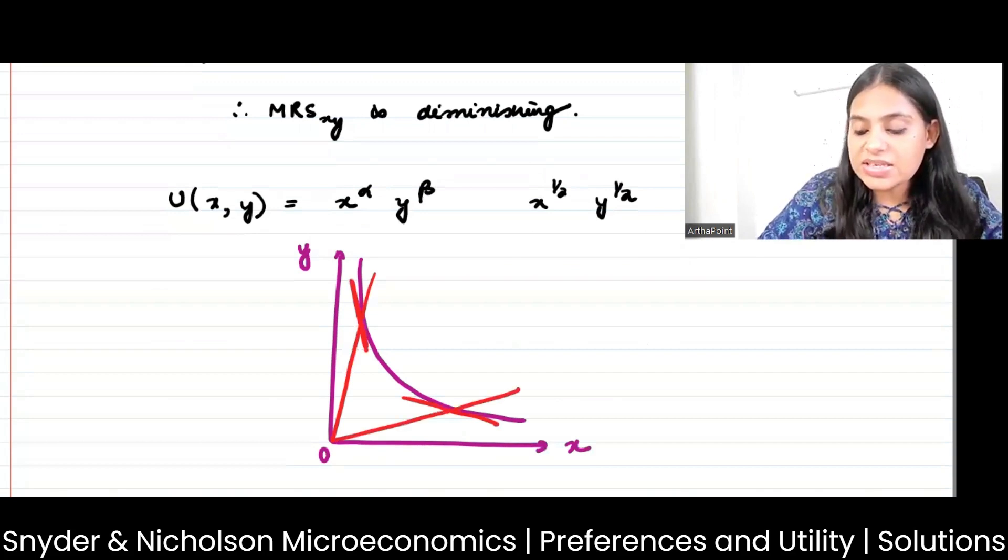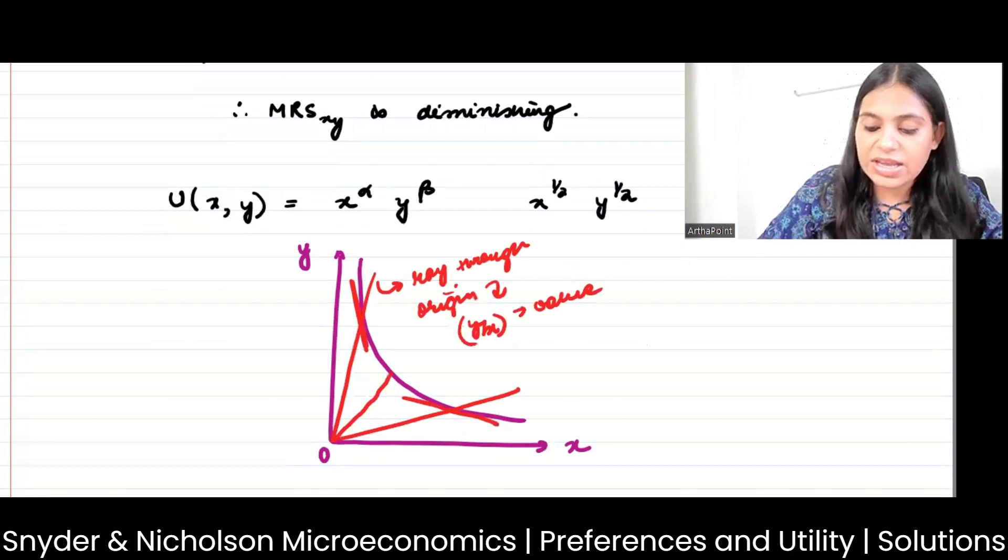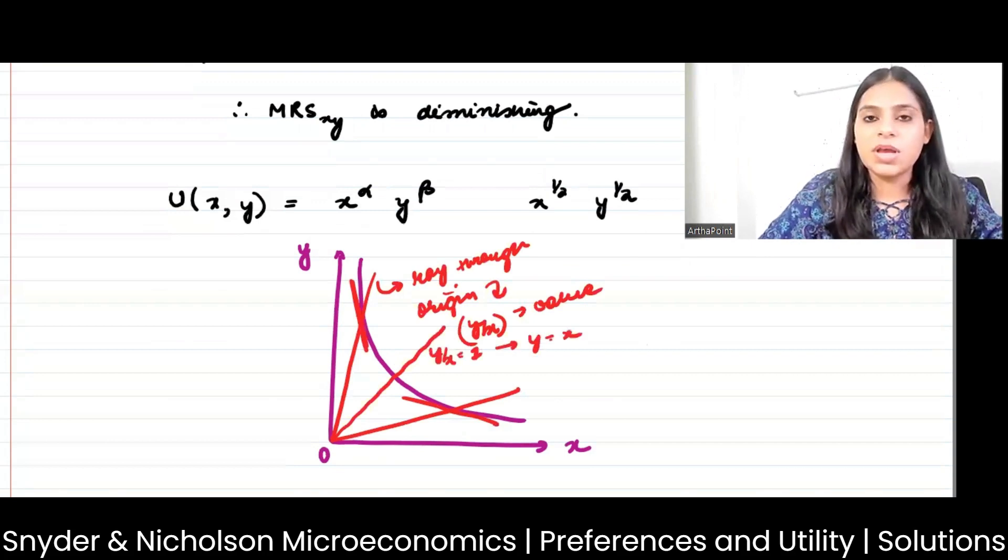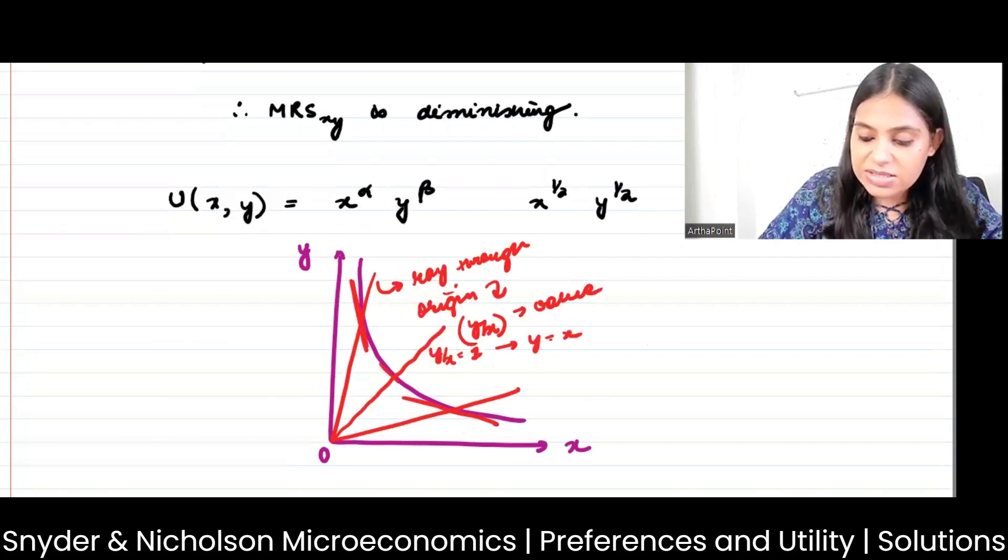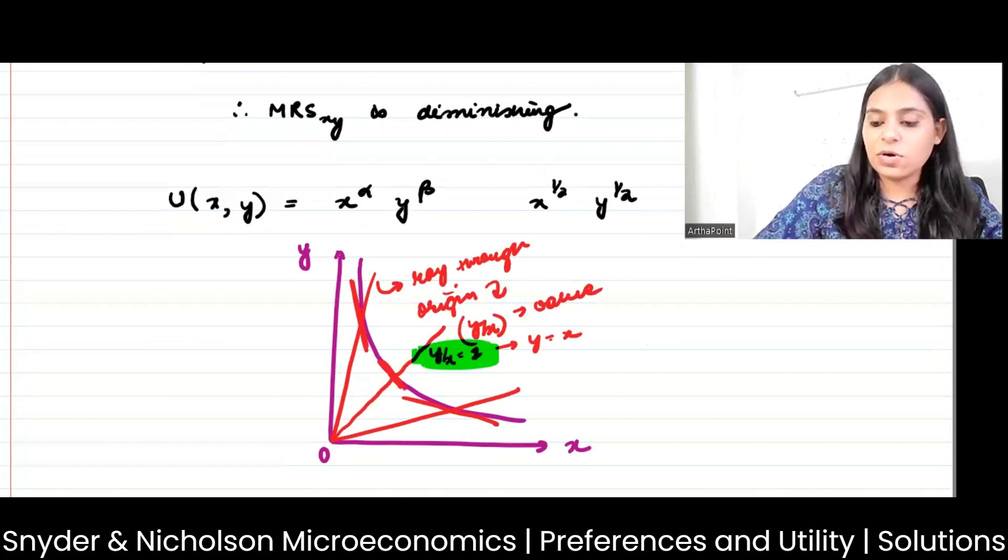So note that this ray through the origin represents a certain y by x value. For example if it is at 45 degrees somewhere here, then y by x will be 1 because y will be equal to x. So I'm saying that this MRS is exactly equal to this ratio in this case, this is what I have got.